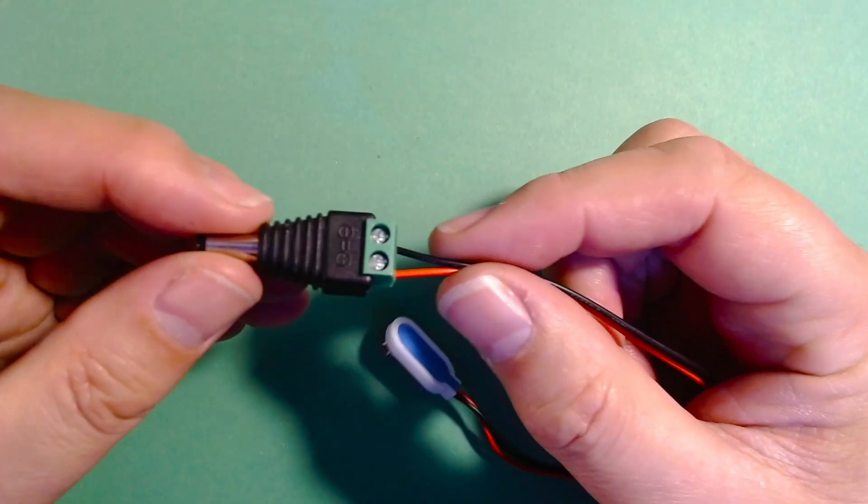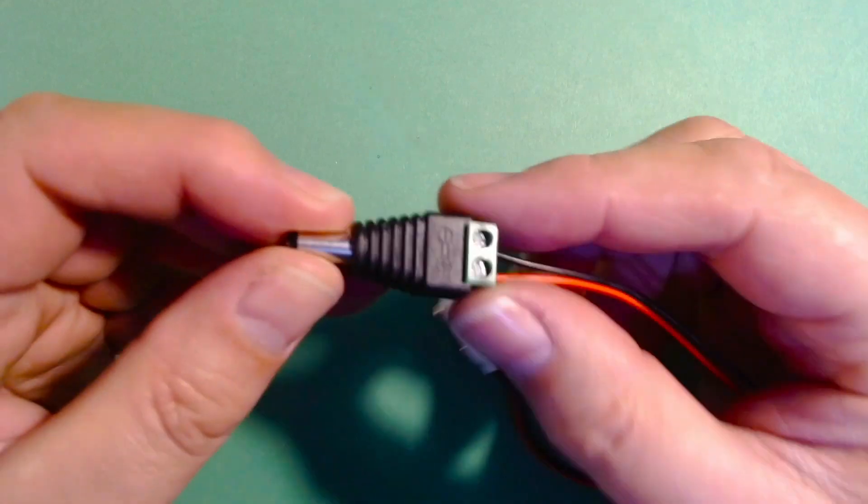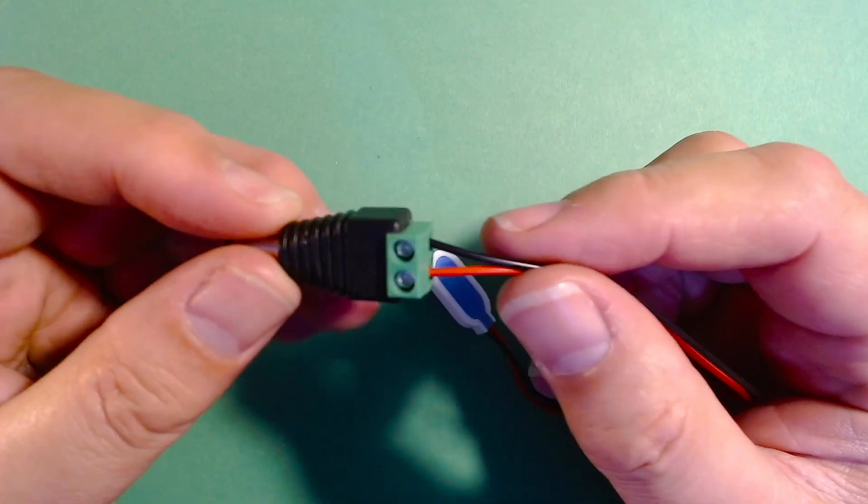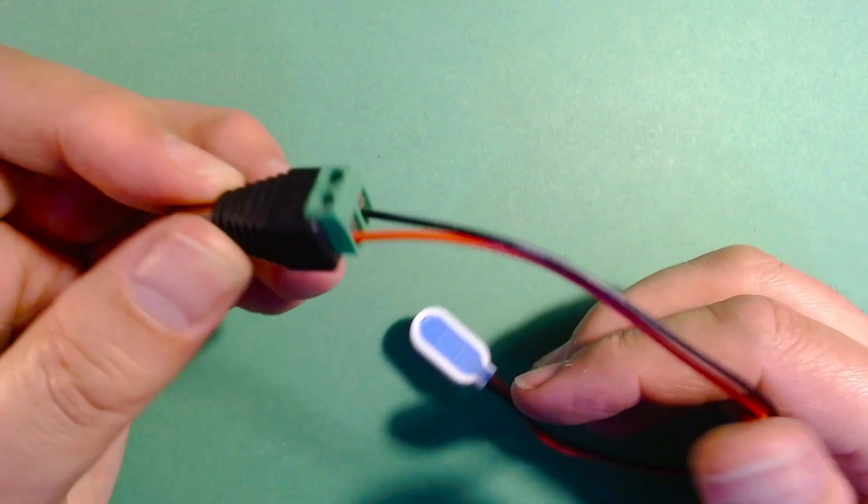Now, just a little thing to note. If you don't want to take apart one of your old power supplies, you can just use something like this. This is a jack plug and you can buy these online and places like Amazon very cheaply so they can work as an alternative.